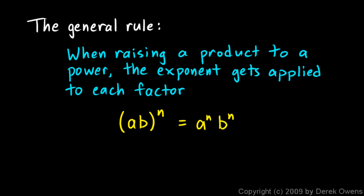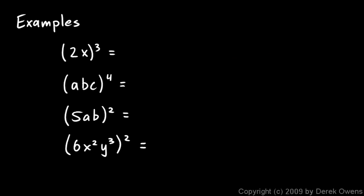And with that in mind, let's work some more examples. You should be able to work these fairly quickly. Without working them all out in detail, you should be able to just apply this concept to go straight to the answer. And here we are. 2x cubed will be 2 cubed times x cubed. And we can take that one step further because 2 cubed is 8, so we can say that's equal to 8x cubed.